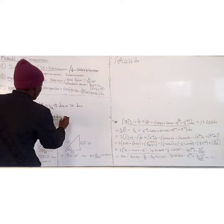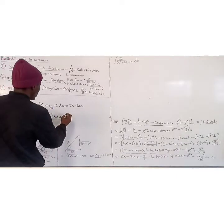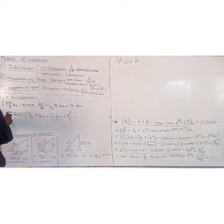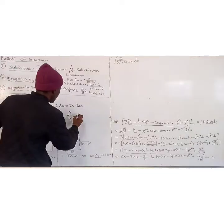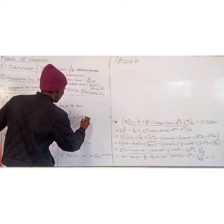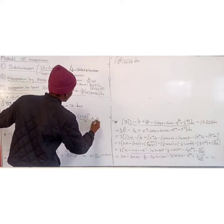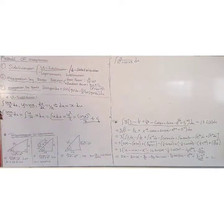Proceeding further, we can now apply the power rule for integration, so this becomes u squared over 2. Since we're solving, we substitute back our u, which is ln(x). So the answer is ln(x) raised to the power 2, all over 2, plus C. That is our final answer using u-substitution.